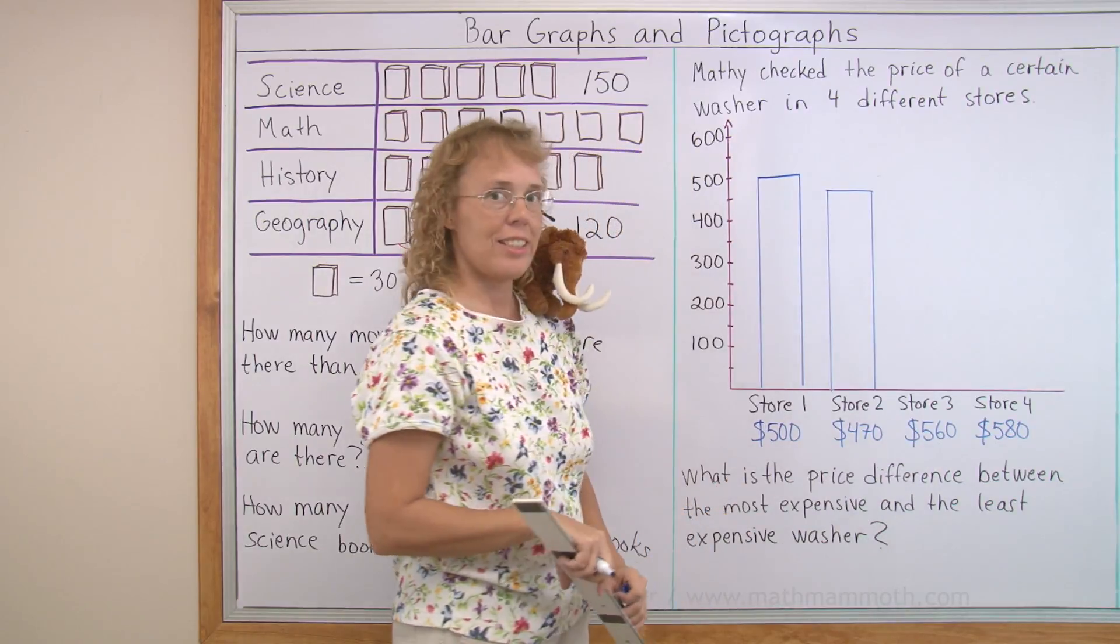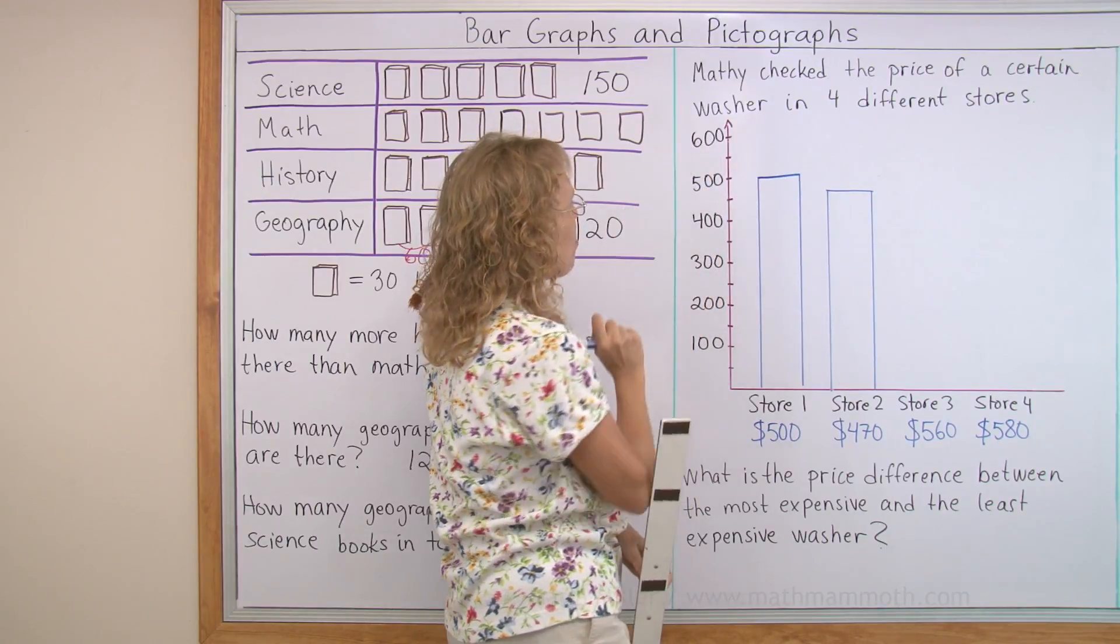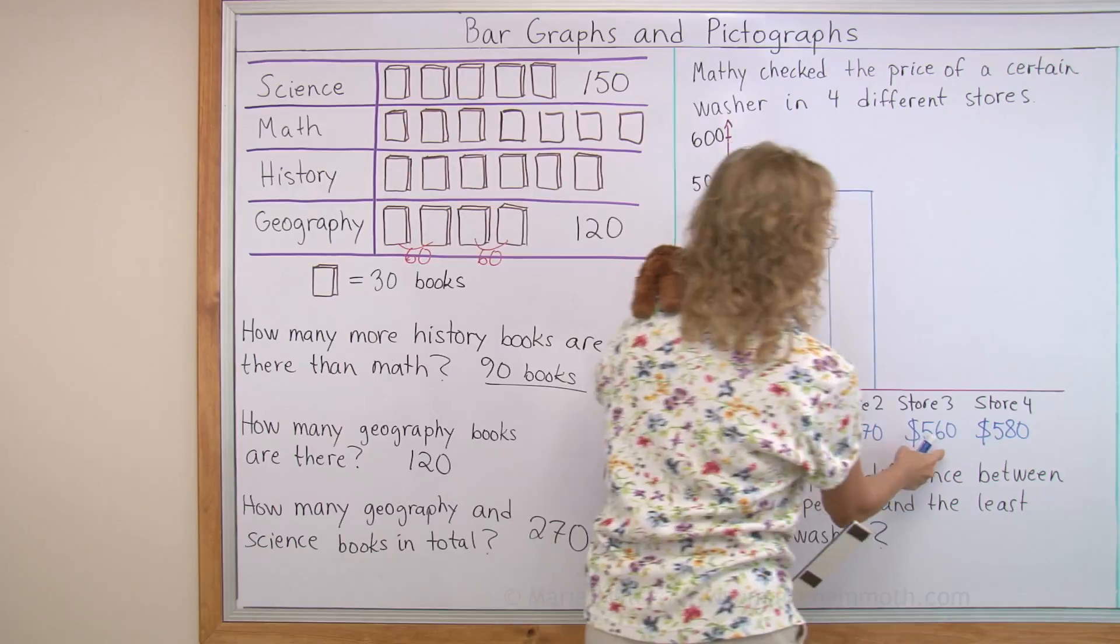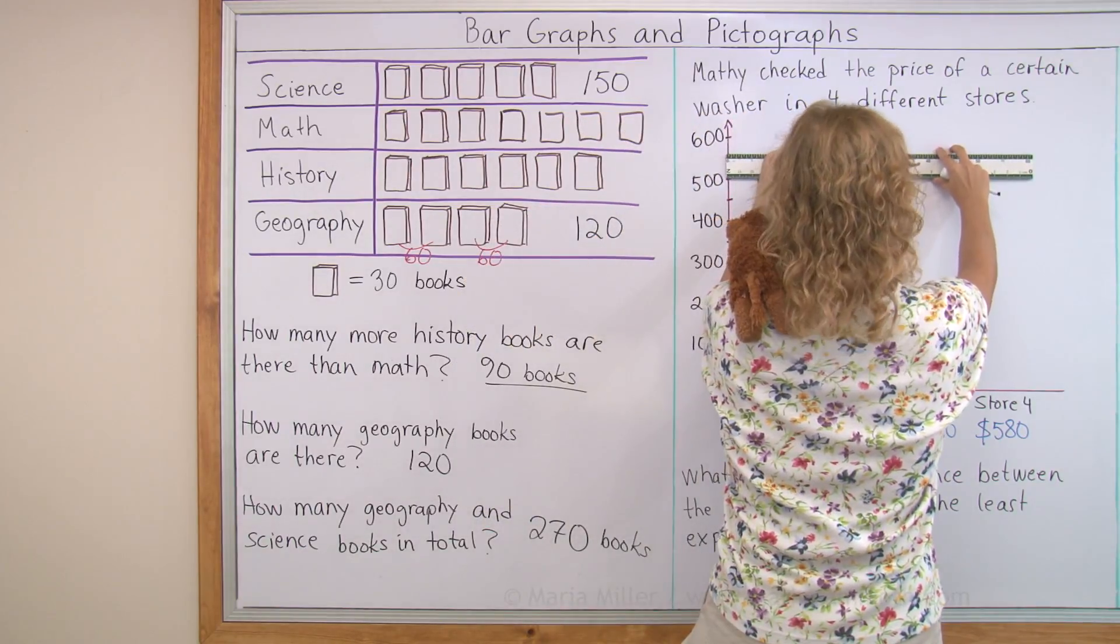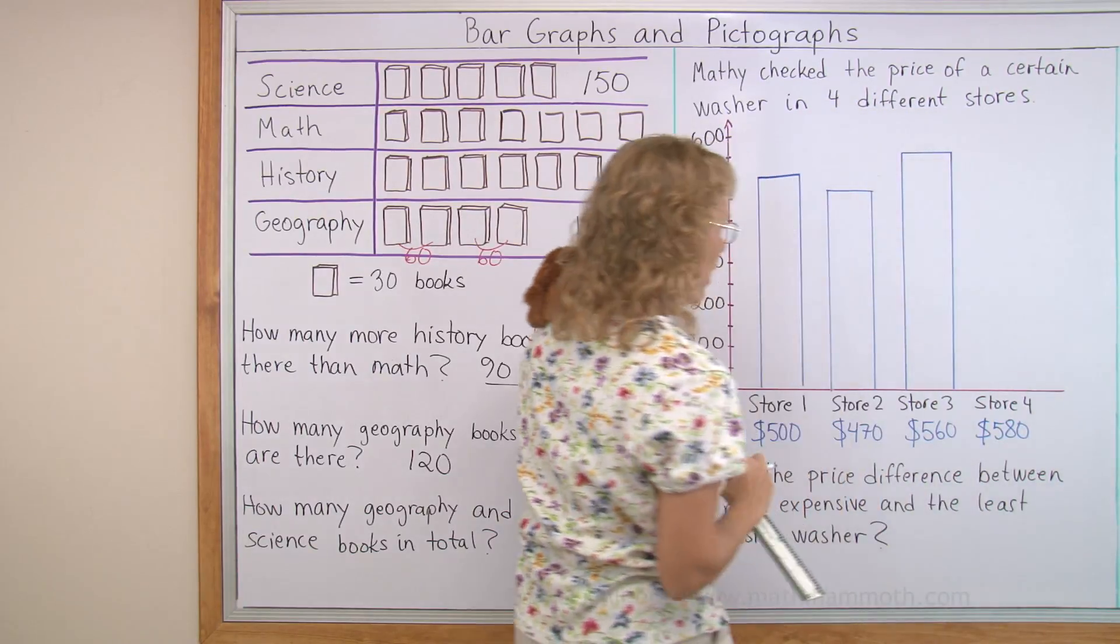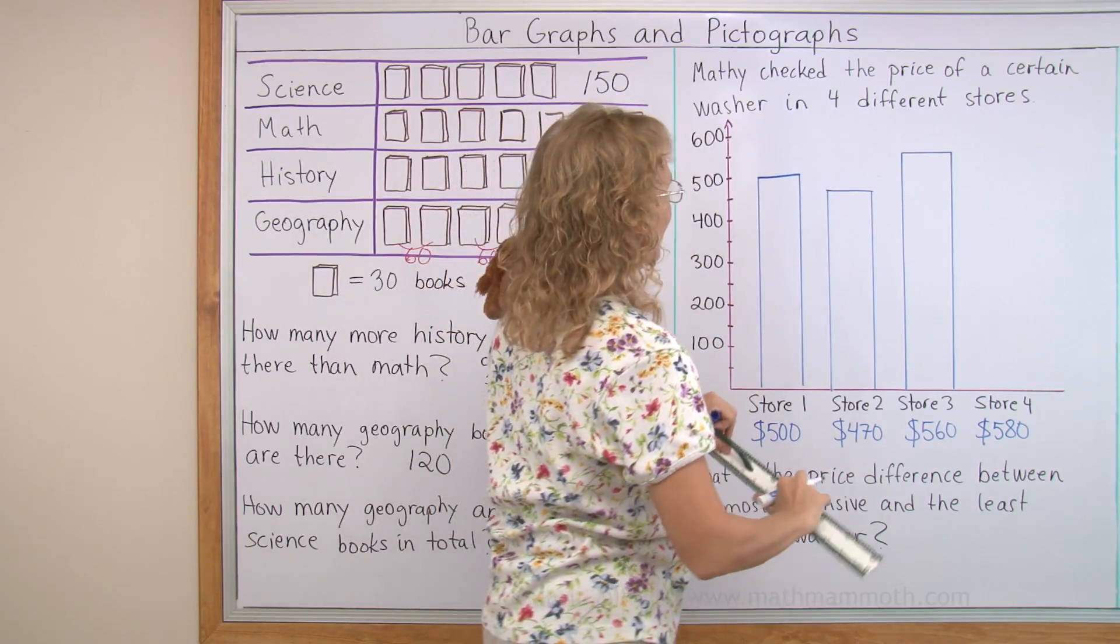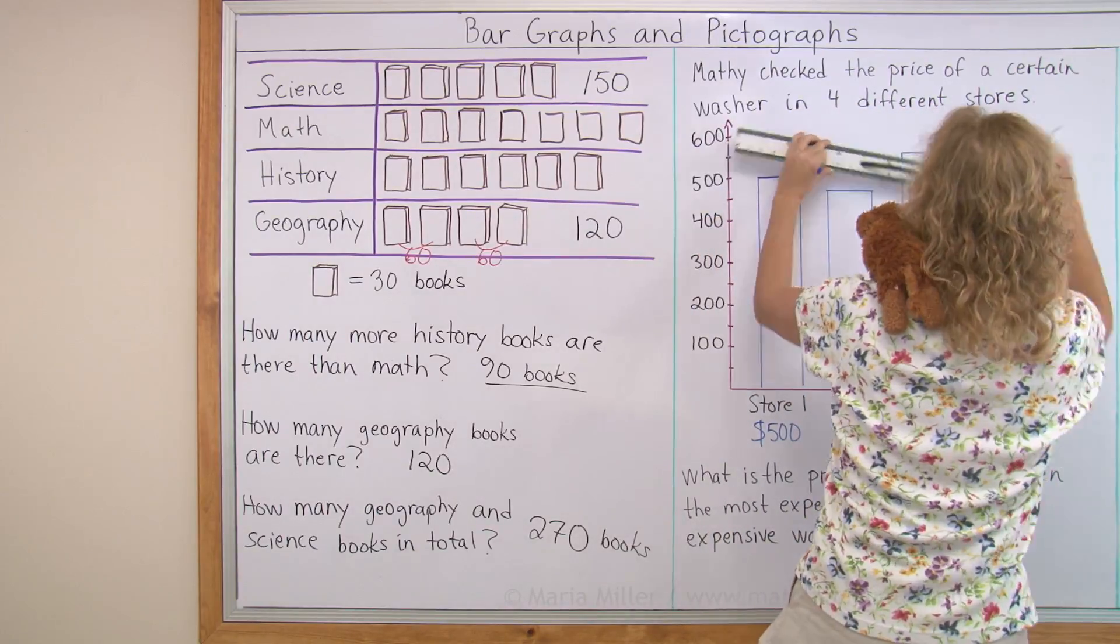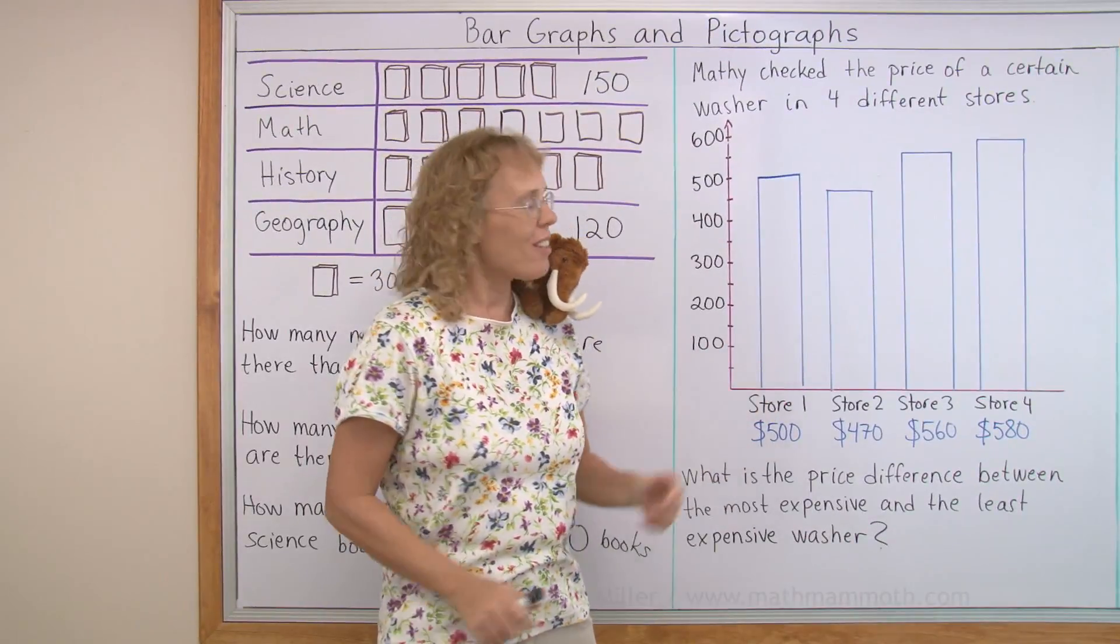And then we have 560. Again, over here is the halfway point. That would be 550. And that is just a tad more than 550. So maybe somewhere there. And lastly, 580. 580 is close to 600, right? So maybe somewhere there. And here is the bar graph all done.